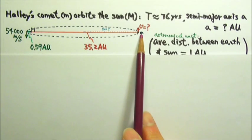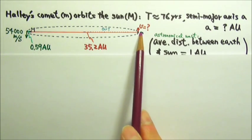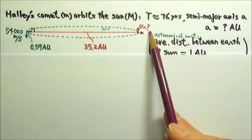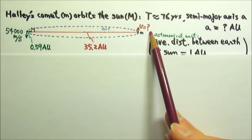At its farthest point to the Sun, the comet is 35.2 AU from the Sun. Find the comet's orbit speed at the farthest point.